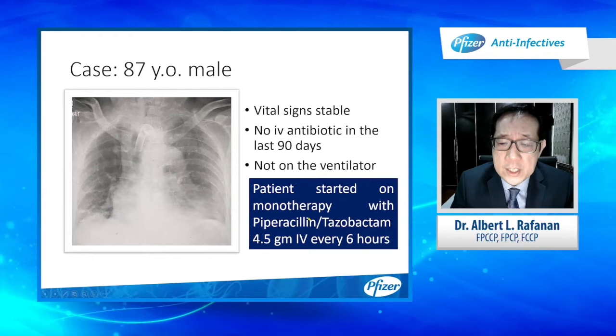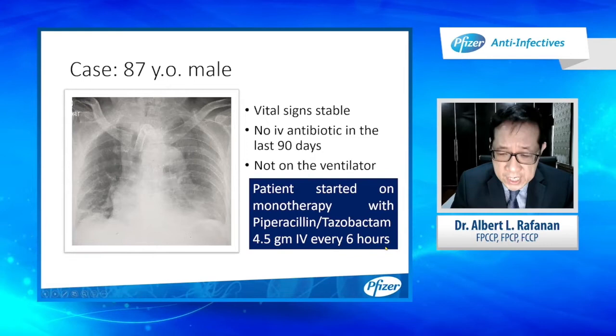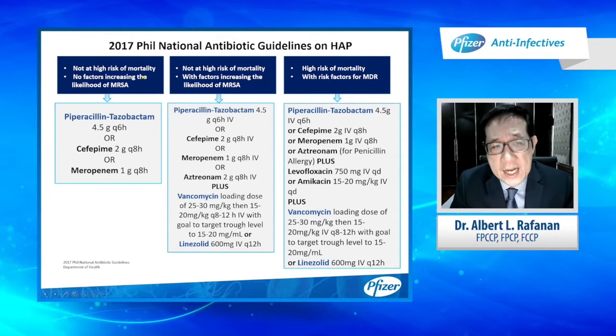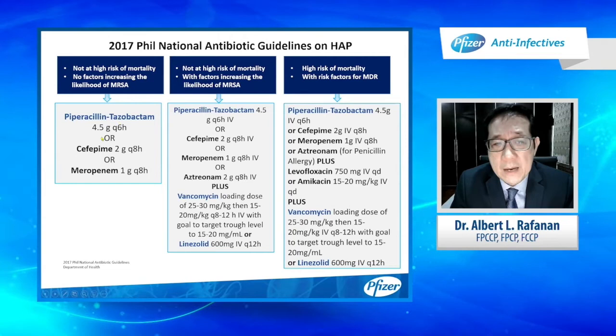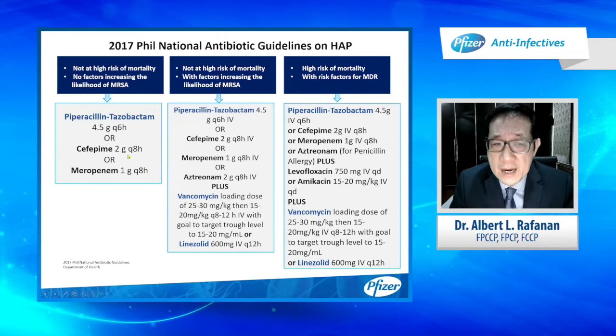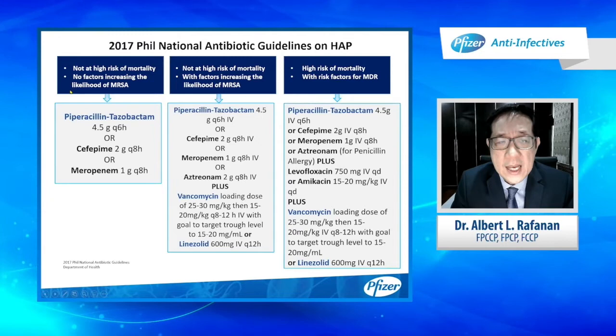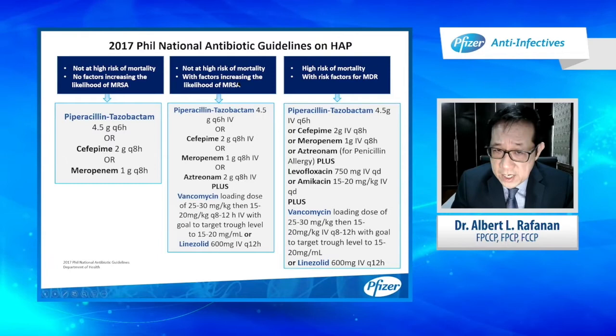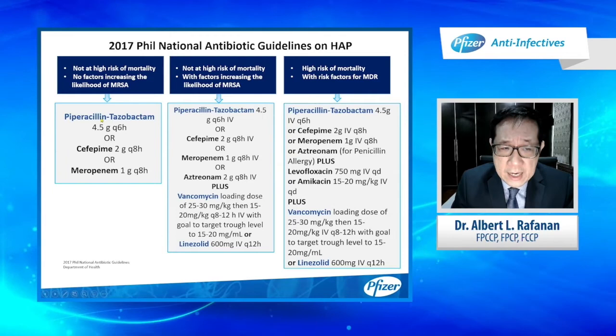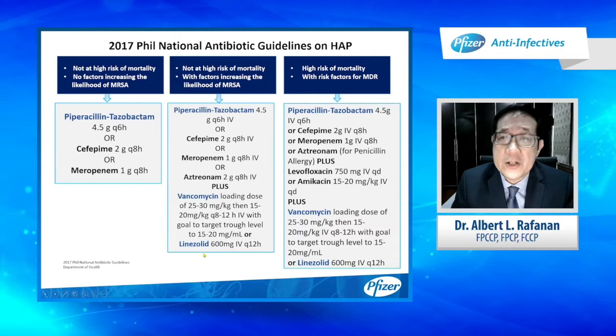The antibiotic we decided to start was piperacillin-tazobactam monotherapy at 4.5 grams every six hours. Per guidelines, if the patient is not at risk of mortality and has no factors increasing the likelihood of MRSA — meaning no IV antibiotics in the last 90 days — treatment options include piperacillin-tazobactam 4.5 grams every six hours, cefepime 2 grams every eight hours, or meropenem 1 gram every eight hours. If not at high risk of mortality but with MRSA risk factors, the same drugs are used plus vancomycin or linezolid.